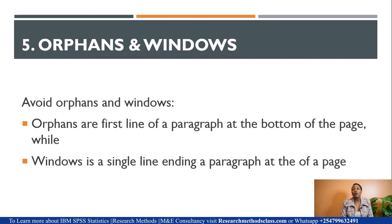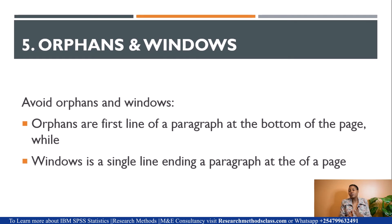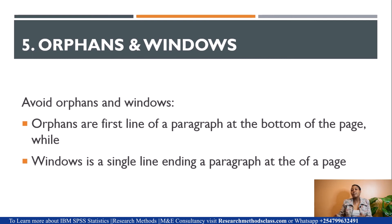Orphans and widows are two things that should be avoided. Orphans are the first line of a paragraph at the bottom of a page, while a widow is a single line ending a paragraph at the top of a page. These are things we sometimes find ourselves doing — you write your text, get to almost the end of the page, write a heading like Literature Review, and the content of that section starts on the next page. This is what we call orphans and widows, and they should be avoided.